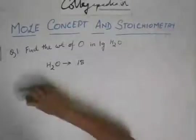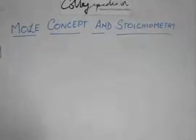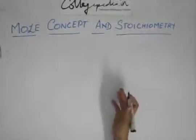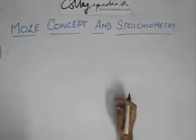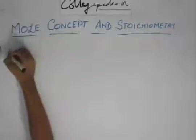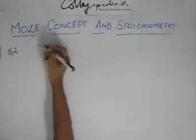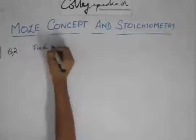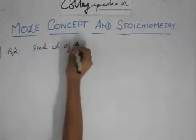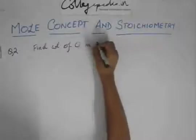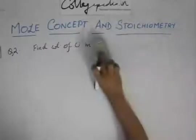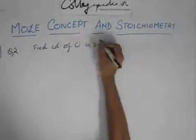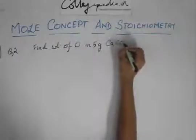Rather than learning formulas or applying new formulas, go by the basic method, which is the unitary method, which never fails. Formulas, if applied wrong, may fail, but this method has hardly any chance to fail. Another question: find the weight of oxygen in—let's not keep it 1 gram—suppose 5 grams of CaCO3.